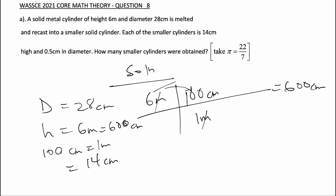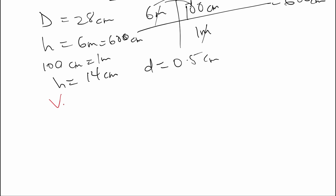The height of the smaller cylinder is 14 centimeters and the diameter (small d) is 0.5 centimeters. We know that the volume of the smaller cylinder times the number of smaller cylinders should equal the volume of the bigger cylinder. The volume of a cylinder is pi r squared h.